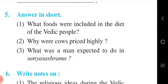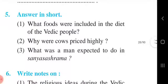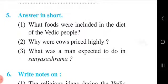Third question: What was a man expected to do in the Sannyas Ashram? Sannyas Ashram was the fourth and the last stage in the life of a man. At this stage, a man was expected to sever all worldly relations and spend his time in meditation by going away to the forest.